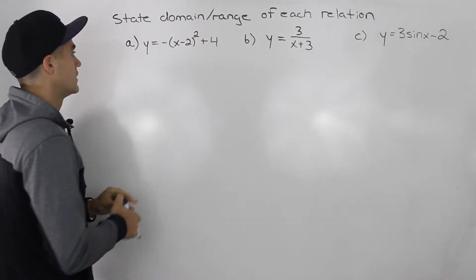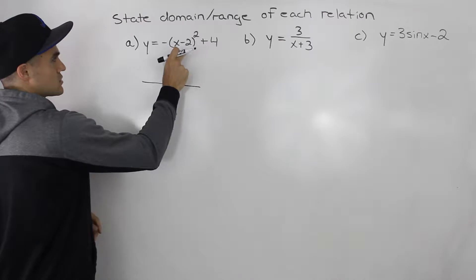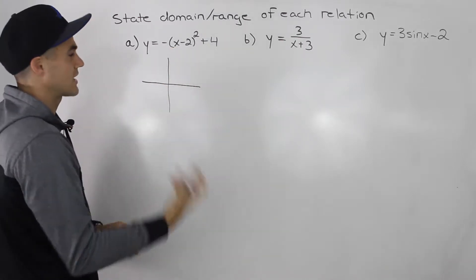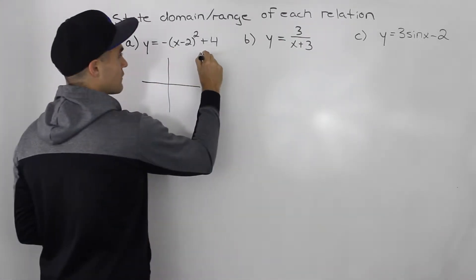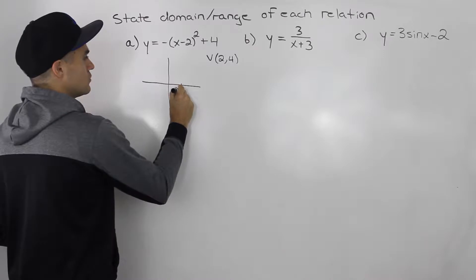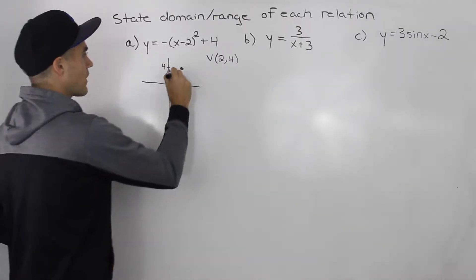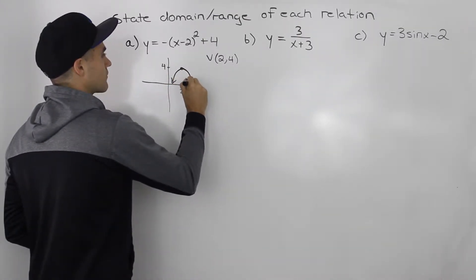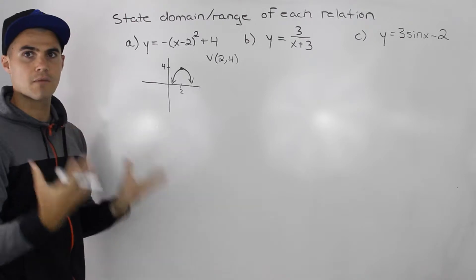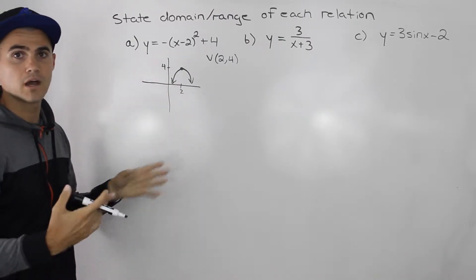Let's start off with this first one: y equals negative bracket x minus 2 squared plus 4. You can tell this is a parabola, because the parent function is y equals x squared. You should be able to tell that the vertex is at coordinate (2, 4). Because the a value is negative, this parabola is opening down. With the parent function y equals x squared, all you need to know is the location of the vertex and whether it's opening up or down.